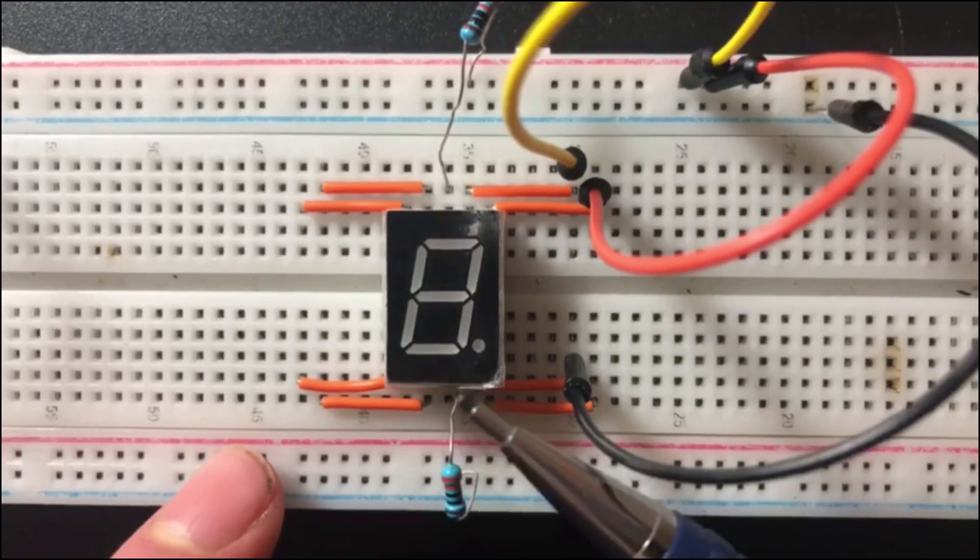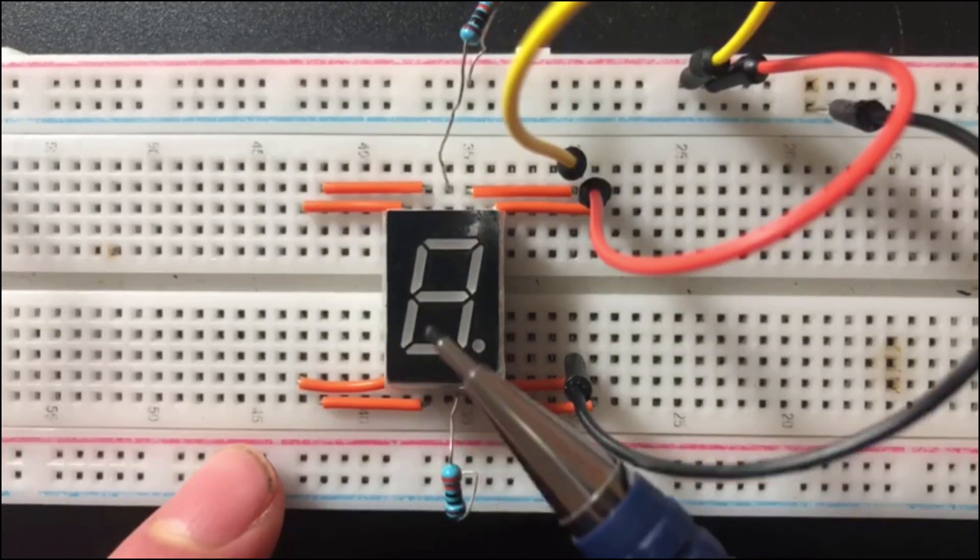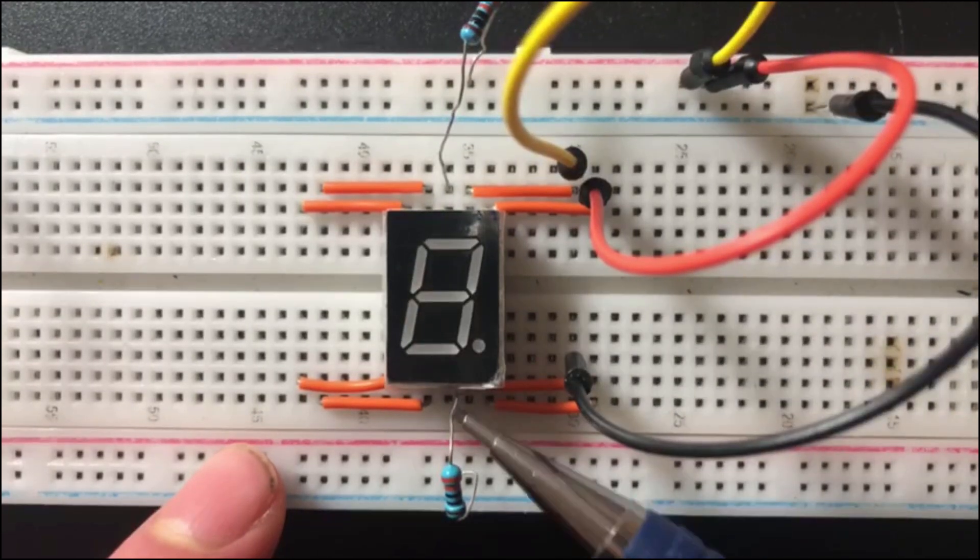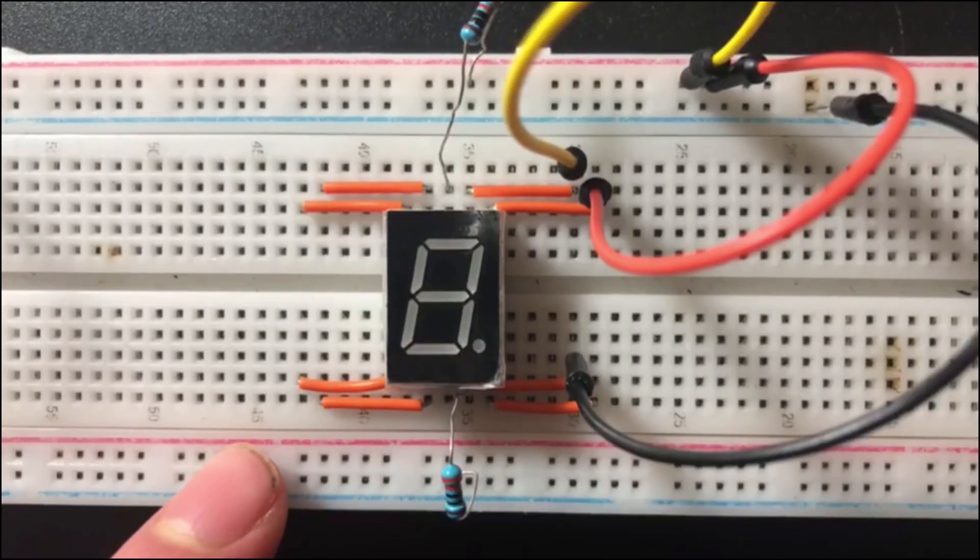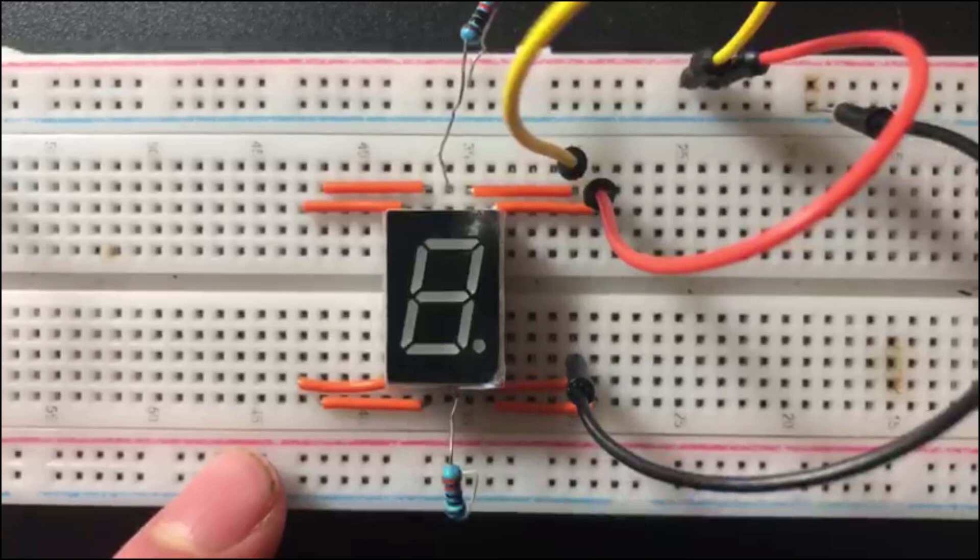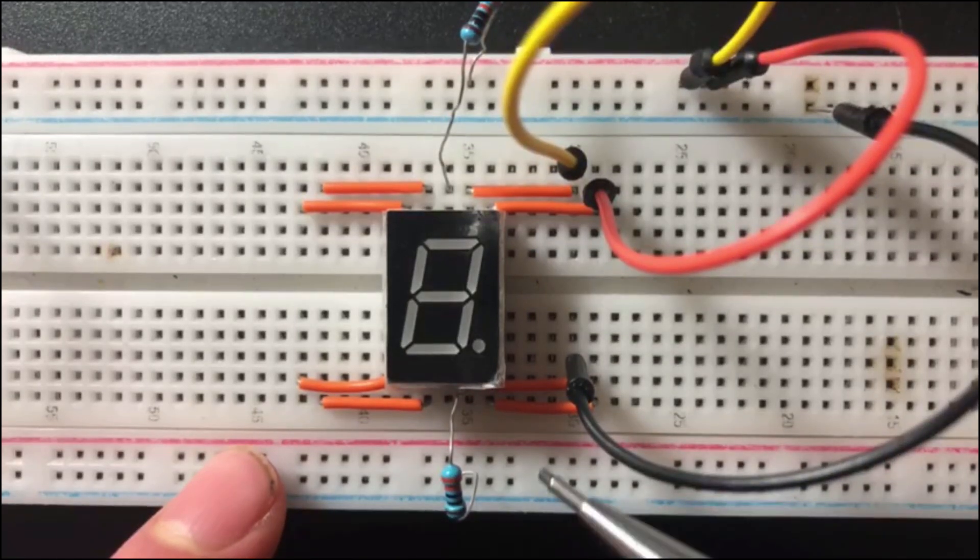So this is my circuit right here and my seven segment display is connected to the positive and negative terminals. Pretty much what this negative terminal is, it's the common cathode. Common cathode is the pin that is shared by all these different LEDs, and so it's the negative pin of this entire component.